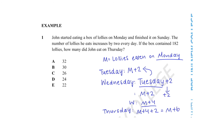Now, returning back to the number patterns concept, we can create a series using this information. Since we know the number totals of each day in terms of m, we can create an equation that depicts this information as a sequence. If John ate the entire box of lollies from Monday to Sunday, that means the number of lollies he ate each day totaled to 182. This information can be represented in the following equation.